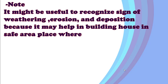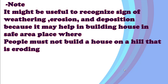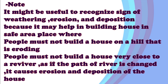It is useful to recognize the location of weathering, erosion, and deposition because it may help in building houses in safe areas. People must not build a house on a hill that is eroding. People must not build a house very close to a river, as if the path of the river changes, it causes erosion and deposition that can affect the house and the natural environment.